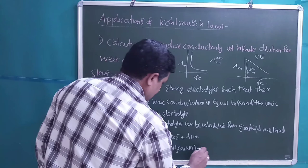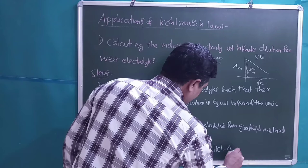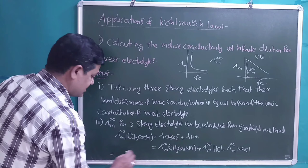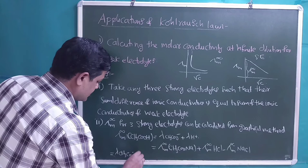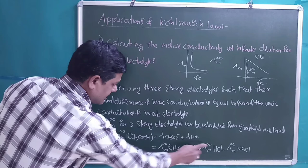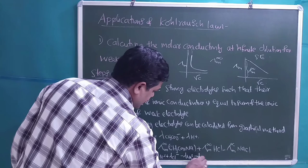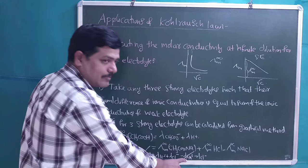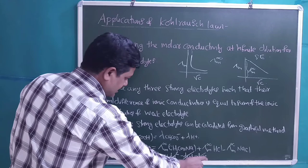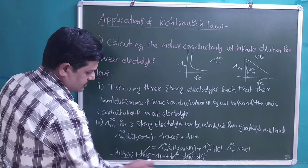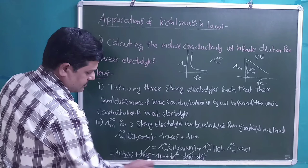We take: λ°m(CH₃COONa) + λ°m(HCl) − λ°m(NaCl). Expanding: [λ(CH₃COO⁻) + λ(Na⁺)] + [λ(H⁺) + λ(Cl⁻)] − [λ(Na⁺) + λ(Cl⁻)]. The Na⁺ terms cancel and the Cl⁻ terms cancel, leaving λ(CH₃COO⁻) + λ(H⁺), which is the molar conductivity at infinite dilution for acetic acid.